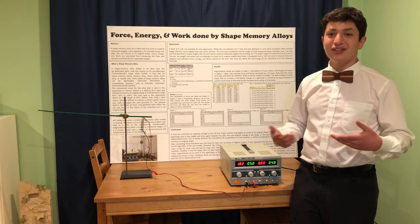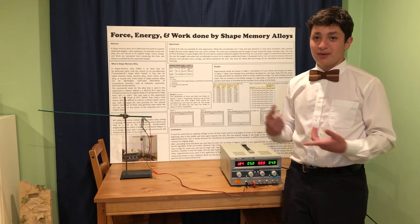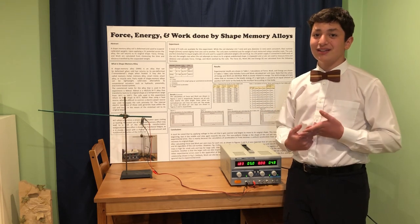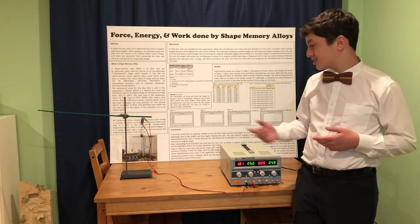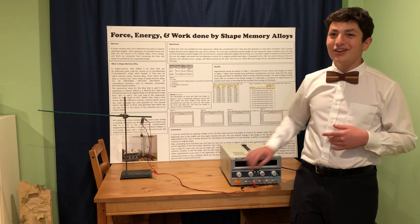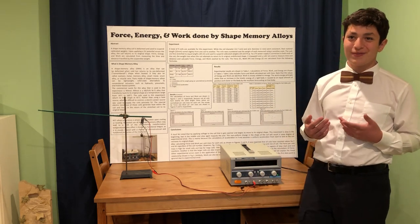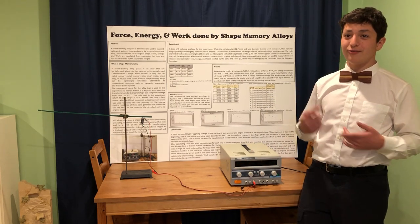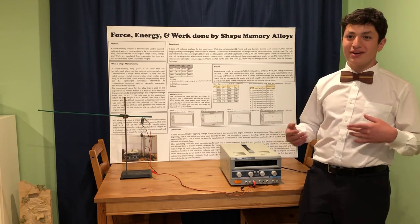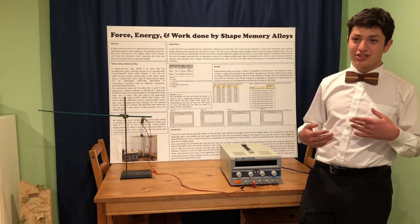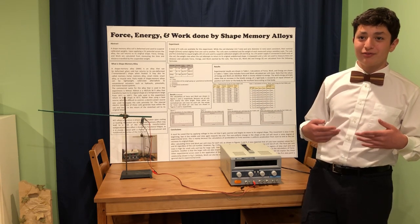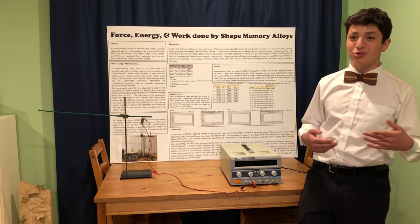We can also calculate the energy, which is mass times the gravitational acceleration and the distance traveled. That same energy is converted to work. Work can be calculated by the formula force times distance. Energy and work will come out to the same value because energy is converted to work. The units for force are Newtons, and for energy and work are Joules.